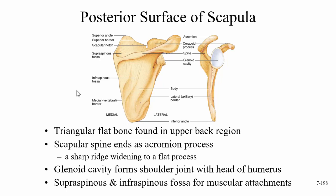Looking at the scapula from the back — the posterior surface — it's a triangular bone found in the upper back region. The scapular spine is a good landmark, and it ends at the acromion process (also called the acromial process). That flat surface of the acromion is going to articulate with the flat acromial end of the clavicle.